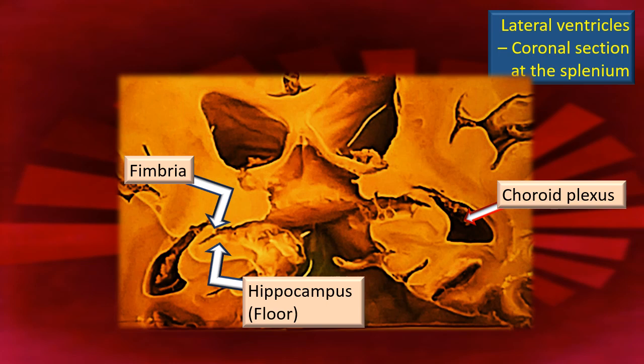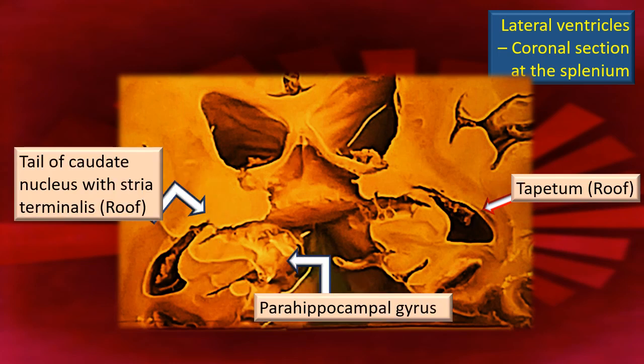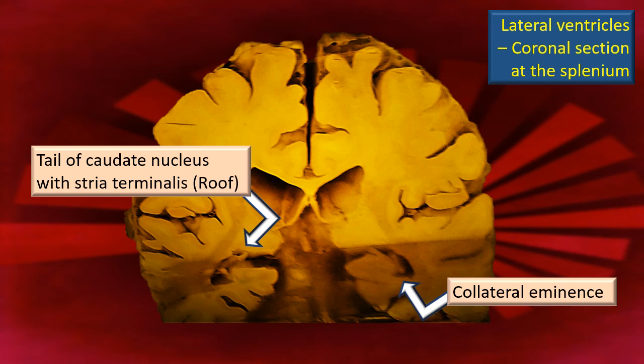Right above the hippocampus you can see the fimbria. What is seen in the roof, however, is the tail of the caudate nucleus and the adjacent stria terminalis. Once again the parahippocampal gyrus is shown, but it does not form any component of the inferior horn. On the other side, the tapetum — the roof made up of white fibers — has to be noted. In summary, in the roof: tapetum, tail of the caudate nucleus, stria terminalis. In the floor: hippocampus. Add one more structure — the collateral eminence. Just as the calcarine sulcus formed an eminence in the posterior horn, here there is a similar deep sulcus, the collateral sulcus, which forms an eminence on the floor of the inferior horn — that is the collateral eminence.